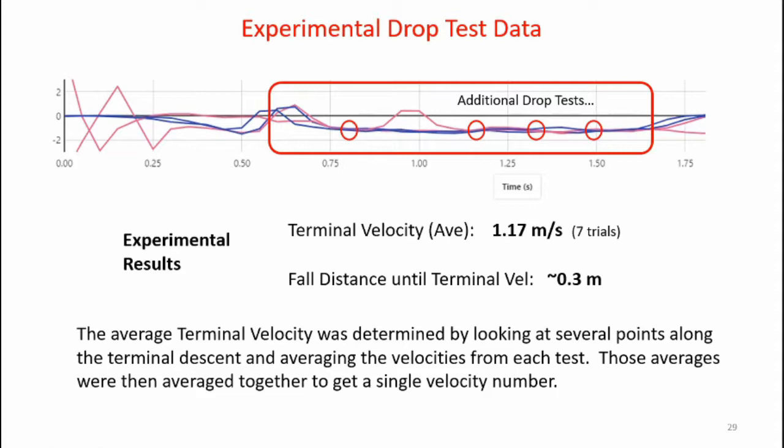You don't need an electronic motion detector to conduct these tests — a simple stopwatch works. Repeating one of the tests using a stopwatch over eight trials, the average drop time came out to be 0.99 seconds over a fall distance of 1.2 meters. Using the velocity equation — fall distance divided by fall time — the average fall velocity came out to 1.2 meters per second. That came out quite close to the 1.17 meters per second measured by the motion sensor, confirming that a stopwatch can give good results for this sort of test.